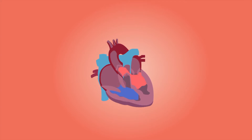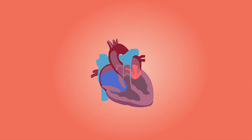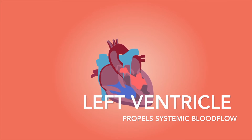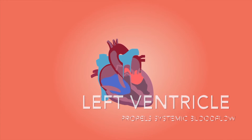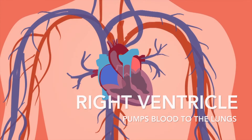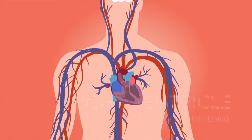Ventricles have thicker muscular walls than atria. When each atrium contracts, it only needs to propel the blood a short distance into each ventricle. The left ventricle has even thicker muscle walls than the right ventricle, as it needs more powerful contraction to propel blood to the systemic circulation. The right ventricle propels blood to the nearby lungs, so the contraction does not need to be so powerful.